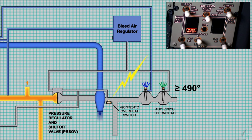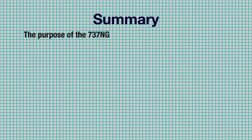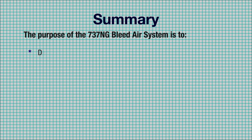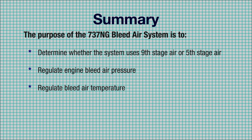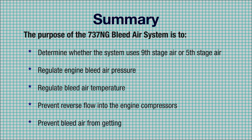In summary, the purpose of the 737NG bleed air system is to determine whether the system uses 9th stage air or 5th stage air to meet system requirements, regulate engine bleed air pressure, regulate bleed air temperature, prevent reverse flow into the engine compressors, and prevent bleed air from getting hotter than 490 degrees Fahrenheit.